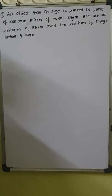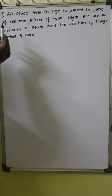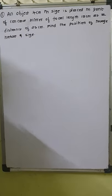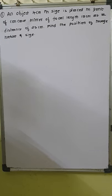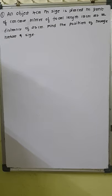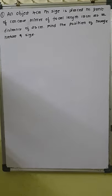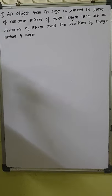We have a problem: an object 4 centimeter in size is placed in front of a concave mirror of focal length 15 centimeter at a distance of 25 centimeter. Find the position, nature, and size of the image. In my experience, most of the time students find it difficult to understand the question and write the given values.